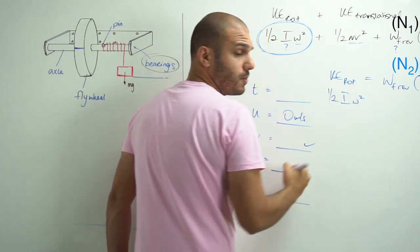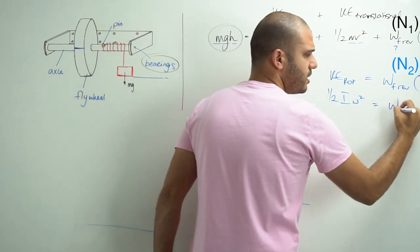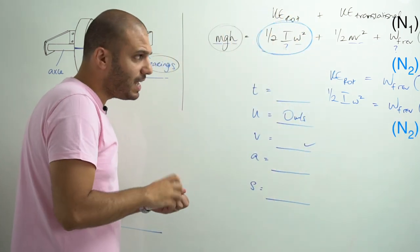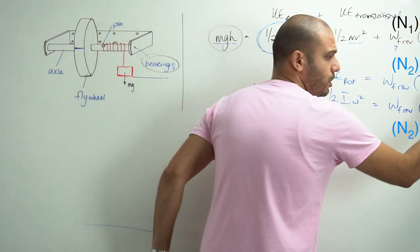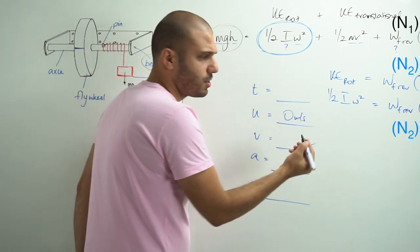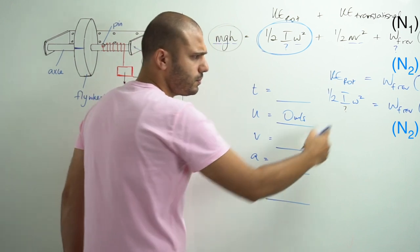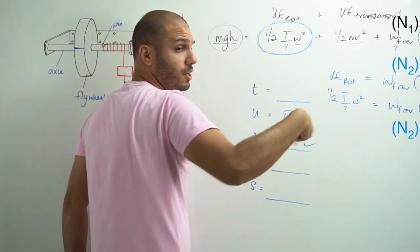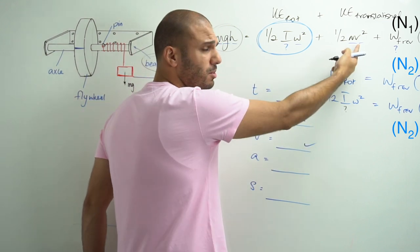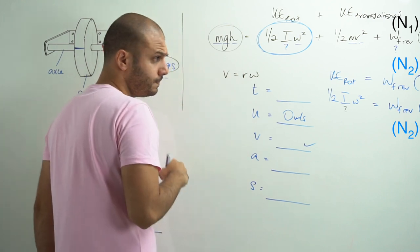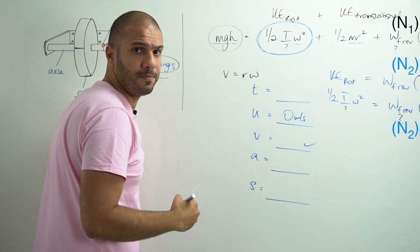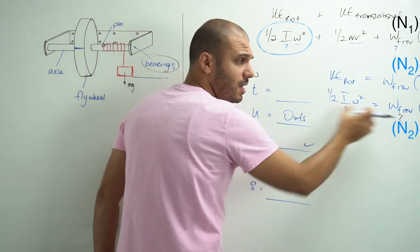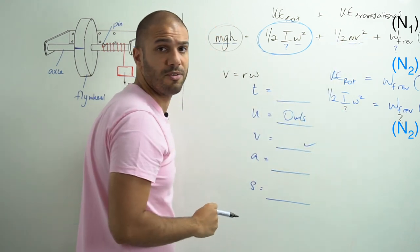The second equation is therefore: half I omega squared equals work done due to friction per revolution times N2. If you've counted the number of turns, we know N2. The moment of inertia I is still unknown, but omega — the maximum angular velocity the flywheel reached — we calculate from the linear velocity using v equals r omega. That leaves us with just these two unknowns, but we don't need the friction work directly in our equation.